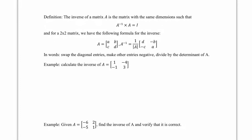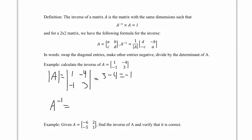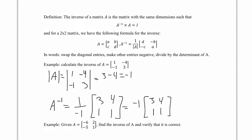A inverse equals 1 over the determinant, times the matrix where we swap the diagonal entries A and D, and negate entries B and C. For our matrix A with entries [1, -4, -1, 3], the determinant is 3 minus 4 equals negative 1. So A inverse is 1 over negative 1 times [3, 4, 1, 1], which gives [-3, -4, -1, -1] — exactly the special matrix that appeared earlier.